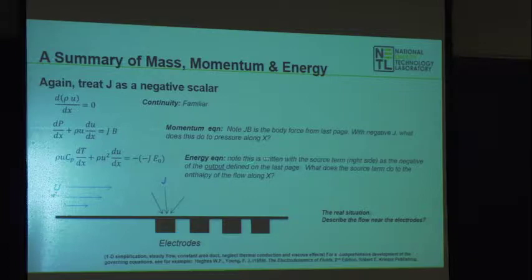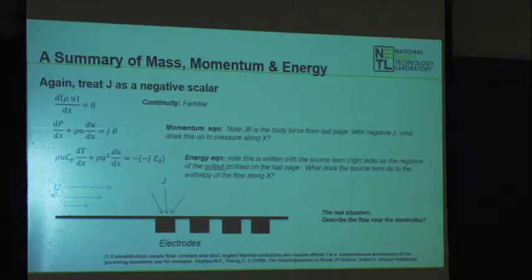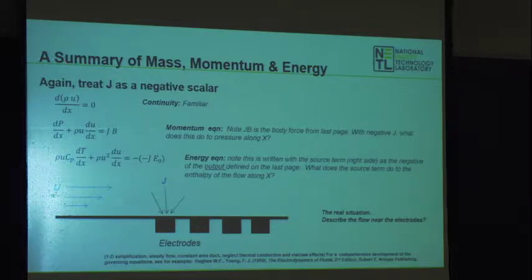In the energy equation, I put in the source term with a negative sign. What does this do to the enthalpy flow along the axis? Adding up all the signs, it's a negative quantity — so the expansion is reducing the enthalpy as you flow down the channel. It is just like a conventional turbine expansion; it's the same thing, just done through the interaction between the magnetic field and the charge in the flow.